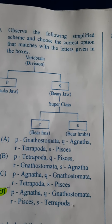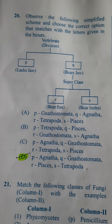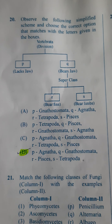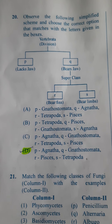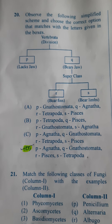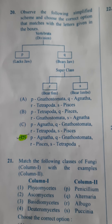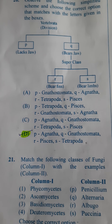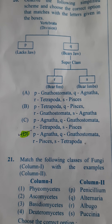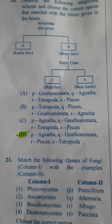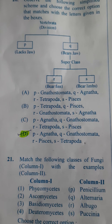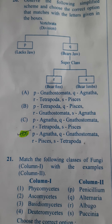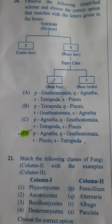Next question: Observe the following simplified scheme and choose the correct option that matches with the letters in the boxes. P refers to Agnatha, Q refers to Gnathostomata, R refers to Pisces, and S refers to Tetrapoda. So the answer here is D.